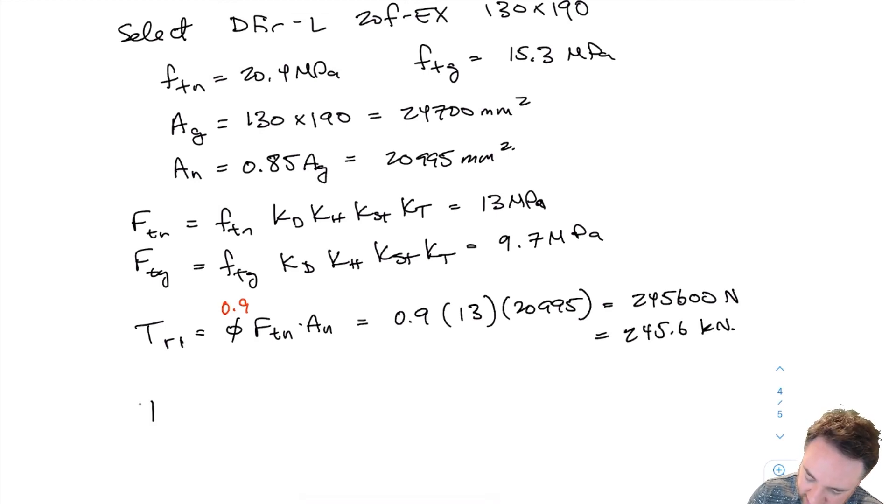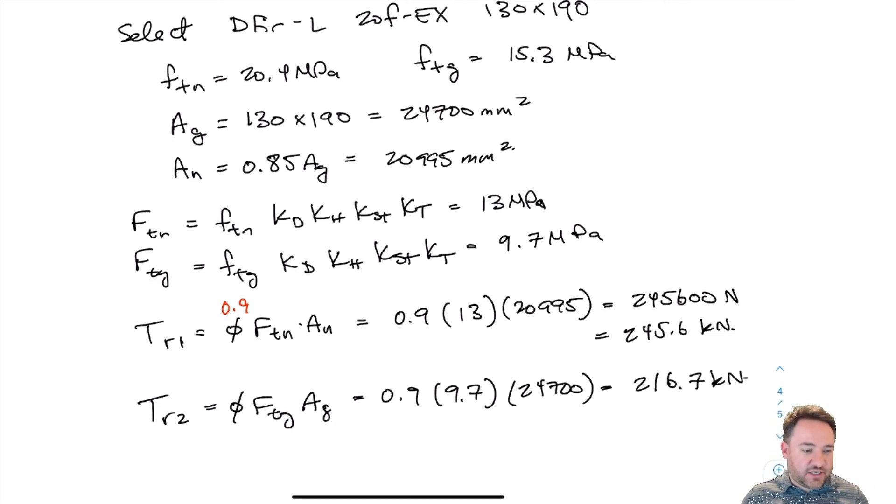If I do my second one, which is for gross area, TR2 is phi FTG times AG. 0.9 times 9.7 times 24,700, I get 216.7 kilonewtons. So you can see, just like the design manual said, for this case since my net area is greater than 75 percent of my gross area, it's the TR2, the one that uses gross area, that governs the strength. This is the lower one, so that's my actual strength.